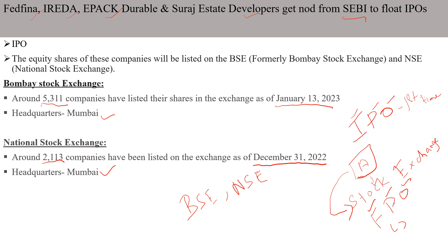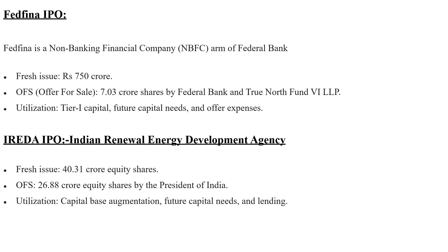Now we will see about the IPO companies. Fedfina is an NBFC arm of Federal Bank. In IPO they are doing a fresh issue of Rs. 750 crores and offer for sale of 7.03 crores. Let me explain what fresh issue and offer for sale mean. Fresh issue means Fedfina company itself is issuing these shares. Offer for sale means other companies that are already holding shares in this company are also selling their shares.